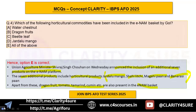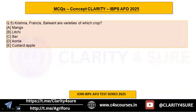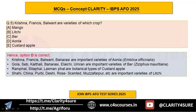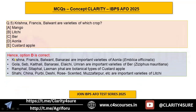Question number five: Krishna, Francis, and Balwand are varieties of which crop? Options are mango, lychee, ber, aonla, or custard apple. The answer is option D, aonla. Krishna, Francis, Balwand, and Banarsi are important varieties of aonla, whose scientific name is Emblica officinalis.